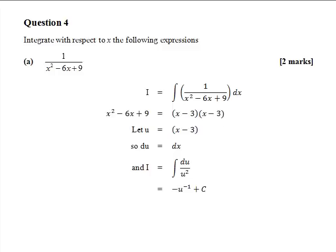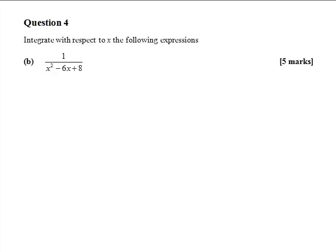Since 1 over u squared equals u to the minus 2, we raise the power by 1 to get u to the minus 1, and divide by the new power, giving minus u to the minus 1 plus the constant of integration. Since u equals x minus 3, substituting back gives minus (x minus 3) to the minus 1, or minus 1 over (x minus 3), plus the constant of integration.